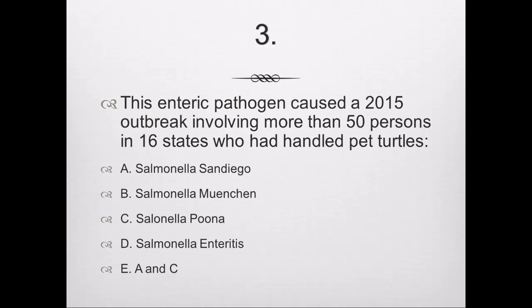Question number 3: This enteric pathogen caused a 2015 outbreak involving more than 50 persons in 16 states who had handled pet turtles. The correct answer is E — both A and C: Salmonella San Diego and Salmonella Poona. The 2015 outbreak affected 51 people in 16 states between January 22nd and September 8th, with 15 hospitalizations and no deaths. Fifty percent of ill persons were young children five years and younger. Epidemiologic and lab findings linked both pathogens to contact with small turtles and their environment.